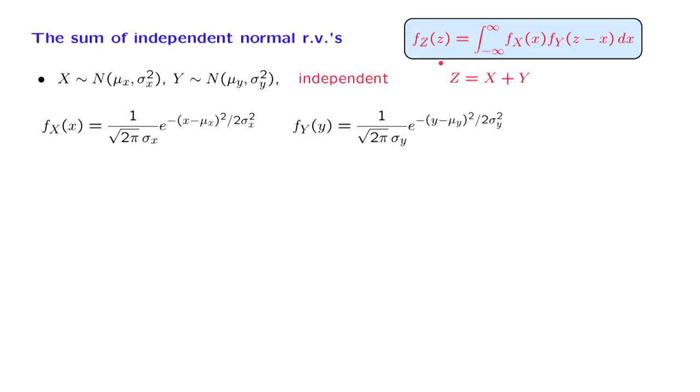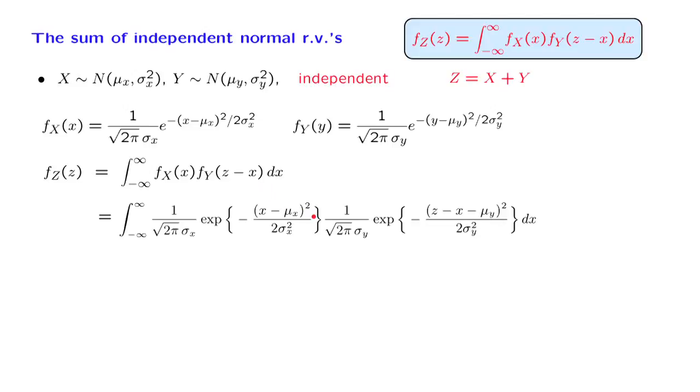Of course, the PDF of Z is given by the convolution formula. And now we plug in here the form for the density of X, and here we plug the form of the density of Y, except that instead of the argument Y, we need to put in the argument Z minus X.